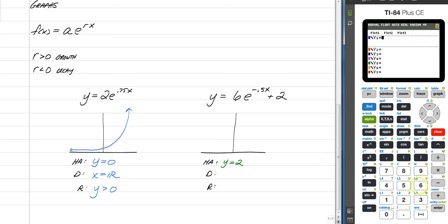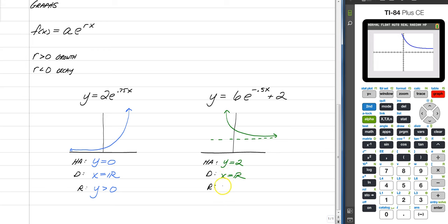So, all we need to do is go type it in, six e to the negative point five x, and then we're going to shift it vertically by two, press the graph, and it should be exactly what you're thinking about. You would have a horizontal asymptote at y equals two, and this time, it's just going to decrease. Our domain, still all real numbers. Our range, it's above the horizontal asymptote, so y is greater than two.